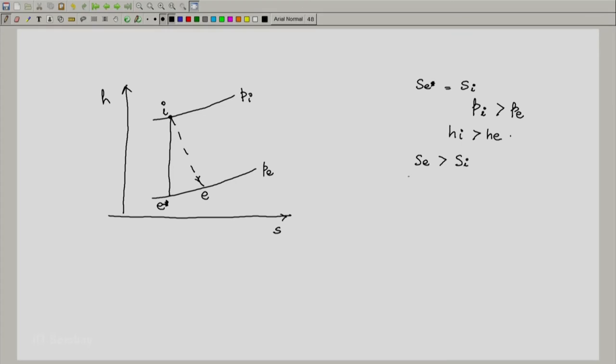Which means that the first law we had written h_e plus v_e²/2 equals h_i plus v_i²/2. We can of course write even for the ideal process the same: h_e* plus v_e*²/2 equals h_i plus v_i²/2. This is the first law, it does not change.